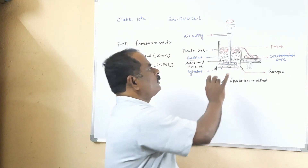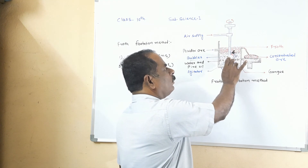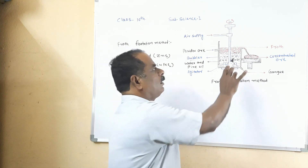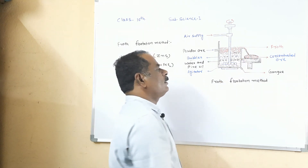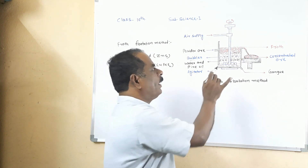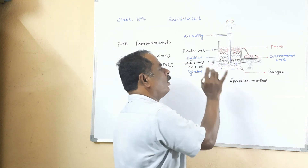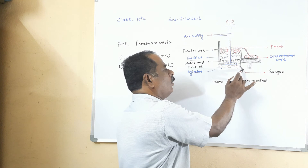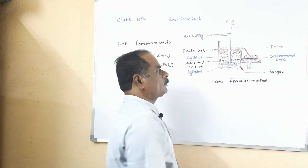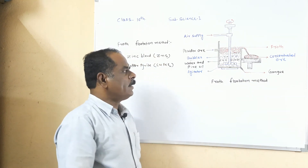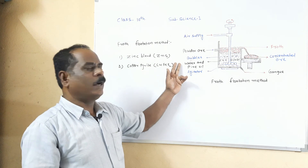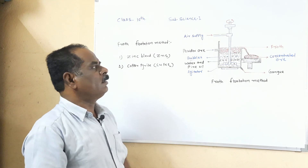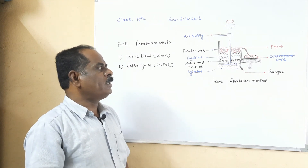Separate this froth into a separate container because it contains the hydrophobic particles. The hydrophilic gangue particles, being soluble in water, are separated from the outlet at the bottom. In this way, we separate the hydrophobic and hydrophilic particles using the froth flotation method.